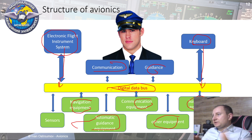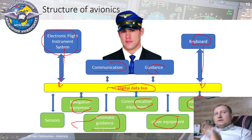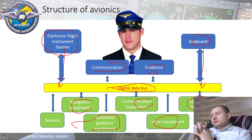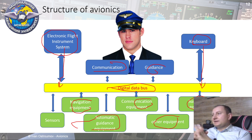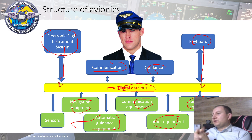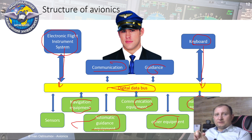This is the main structure of modern avionics equipment, and with this scheme I would like to conclude for today. Please take note: next time we will talk much more about line replaceable units on board of aircraft. Thank you very much for watching, see you next time.